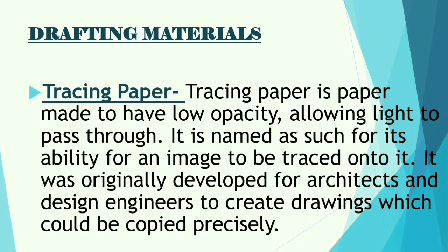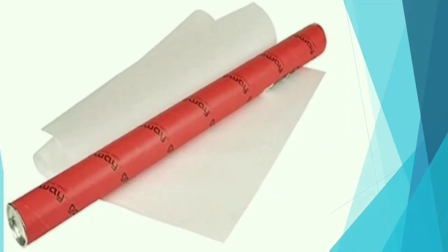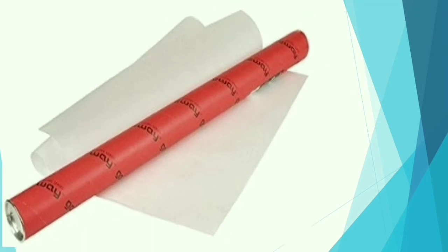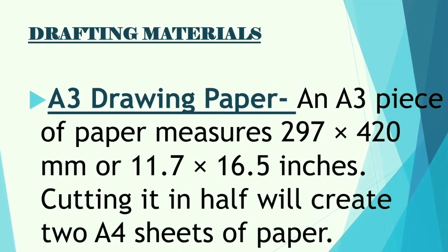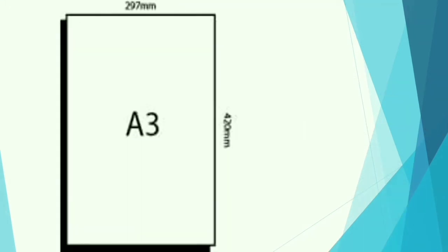Next is tracing paper — a paper made to have low opacity, allowing light to pass through. It is named as such for its ability to have an image traced onto it. It was originally developed for architects and design engineers to create drawings which could be copied precisely. It's a clear type of paper. Next is A3 drawing paper — an A3 sheet measures 297 by 420 mm or 11.7 by 16.5 inches. Cutting it in half creates two A4 sheets.